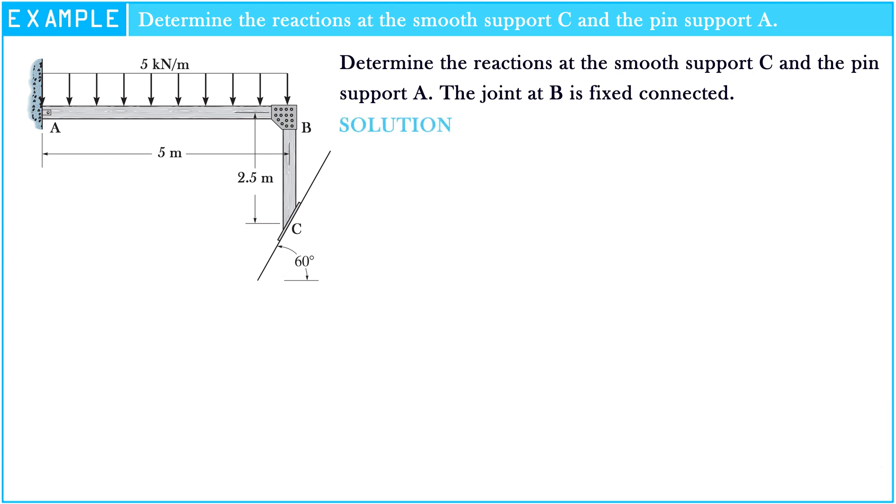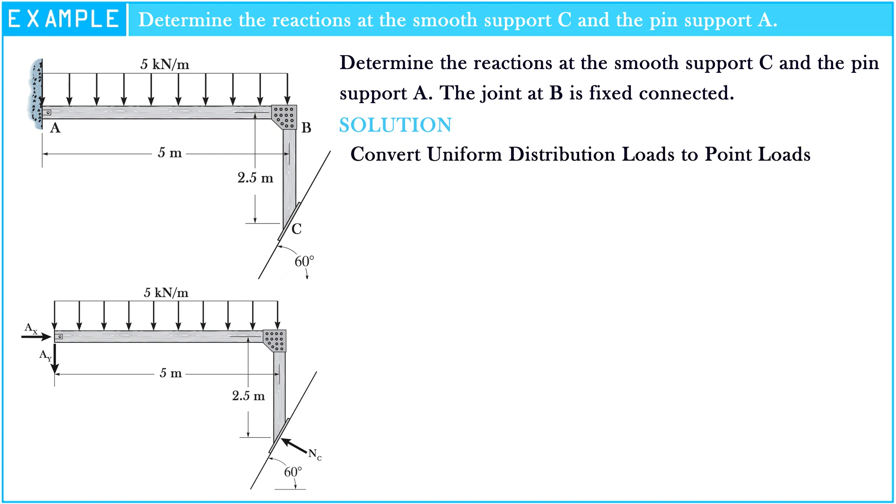To determine the reactions at the smooth support C and the pin support A, first convert the uniform distribution load to point load. Point load equals 5 kN per meter multiplied by 5 meters equals 25 kN.